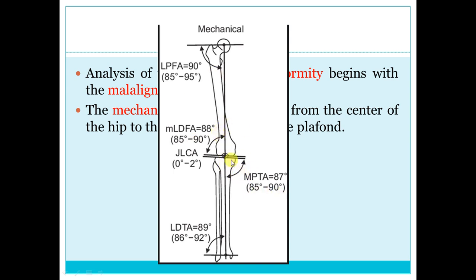The joint orientation line of the distal femur and the joint orientation line of the proximal tibia with the mechanical axis form 87 degrees each. If this tibial angle is 80 degrees — decreased — the tibia is going inward, so it is varus of tibial origin. If increased, it is valgus of tibial origin. For the distal femur, if decreased it is valgus of femoral origin. Joint orientation lines also help detect intra-articular abnormality. In Blount or tibial plateau depression, you must elevate — never correct by valgus osteotomy alone.